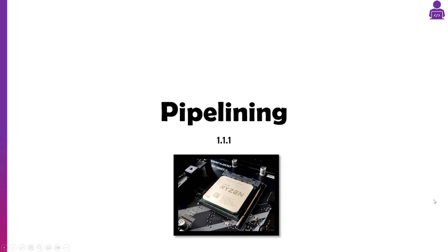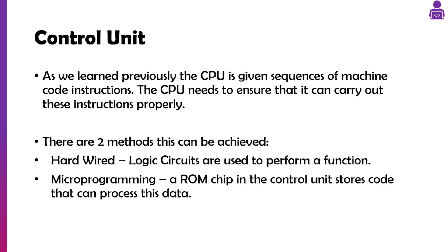In this video we're going to take a look at pipelining. As we learned previously, the CPU is given a series of instructions in machine code. The CPU needs to ensure those instructions can be carried out properly. We can either have a hardwired CPU which has lots of logic gates — we associate this more with RISC — or microprogramming, where you have an additional chip which can process data, such as a multiply instruction, where RISC might do multiple loops of addition to achieve the same result.